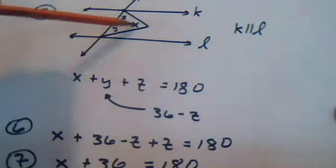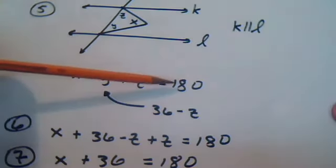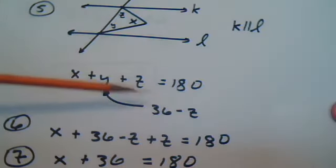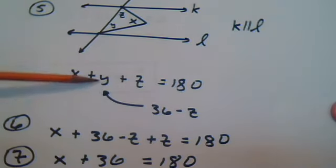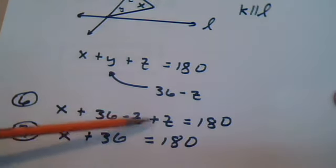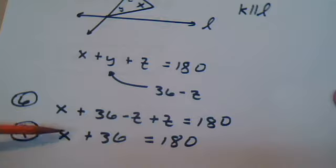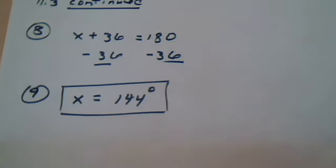We know that the three angles of any triangle always add up to 180. So we're going to replace y with 36 minus z to reduce the variables. After substitution, we only have x's and z's, and the z's cancel — z minus z is zero. Now we find x: x + 36 = 180. Subtracting 36 from both sides gives us x = 144 degrees.